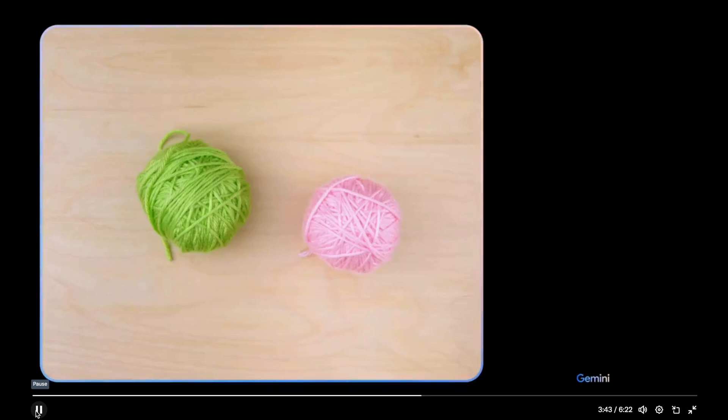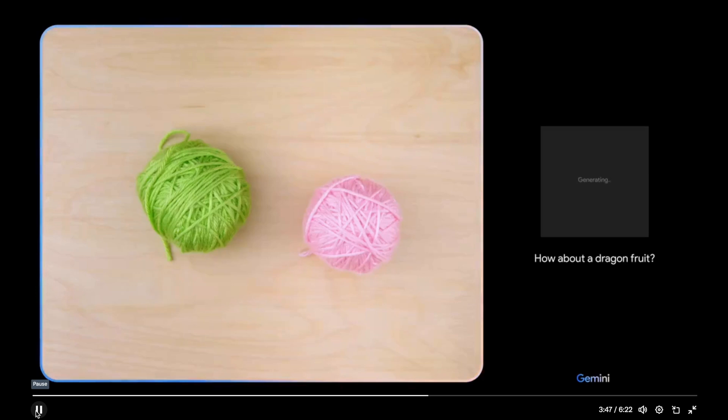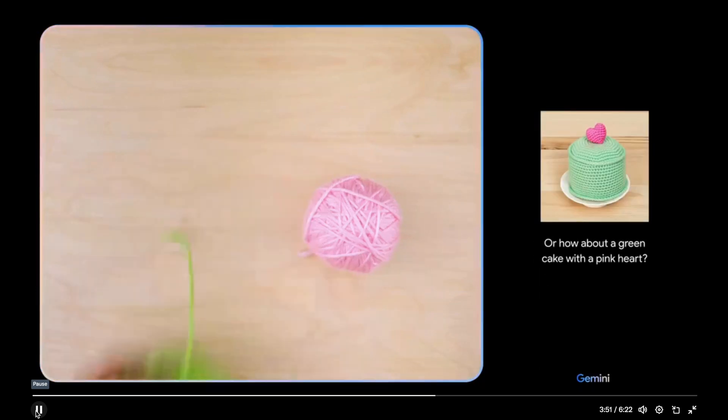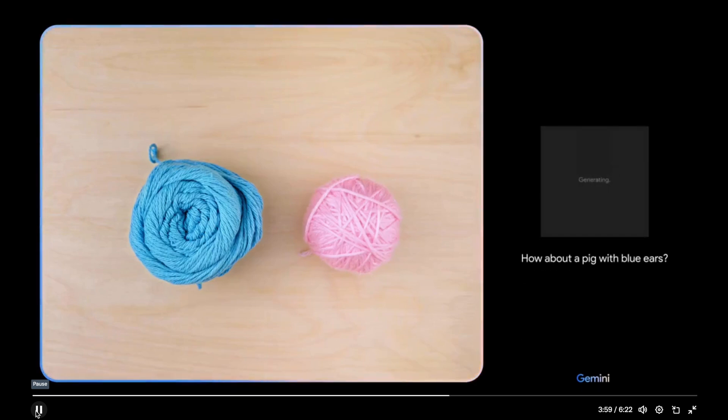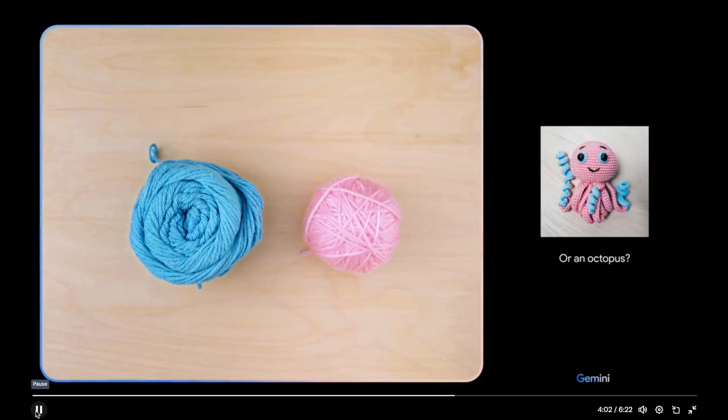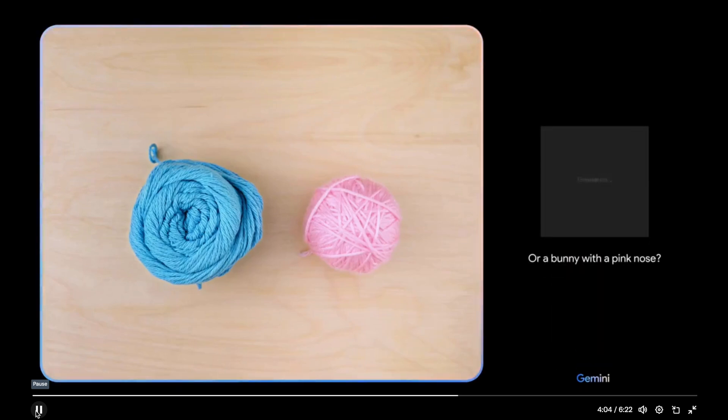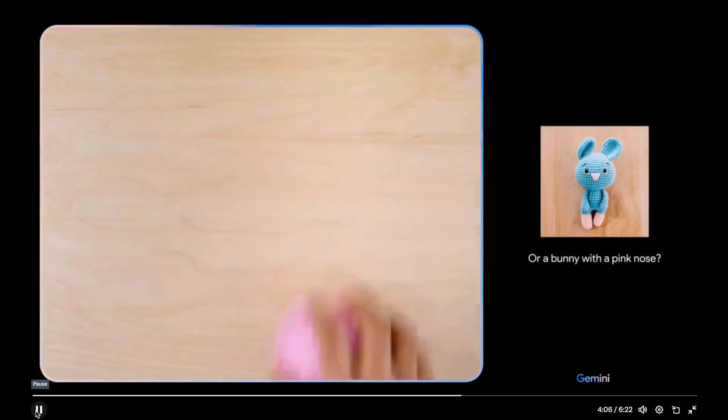Give me some ideas for what I could make with this. I see pink and green yarn. How about a dragon fruit? Or how about a green cake with a pink heart? Okay. How about these colors? And maybe show me some animals. Okay. Now I see blue and pink yarn. How about a pig with blue ears? Or an octopus? Or a bunny with a pink nose? Ooh. I'll keep those in mind.